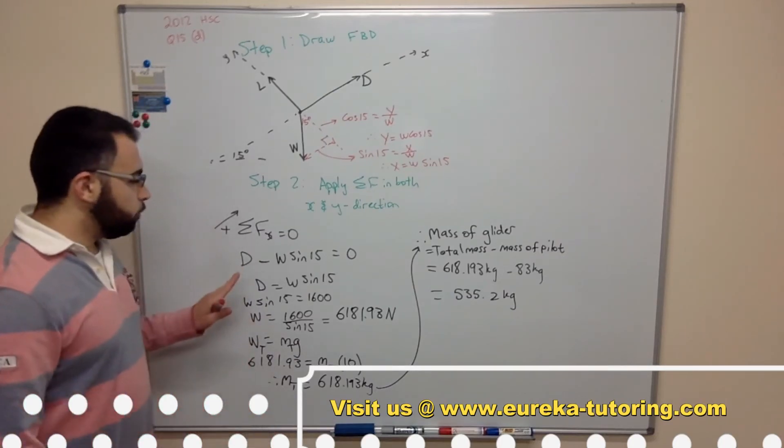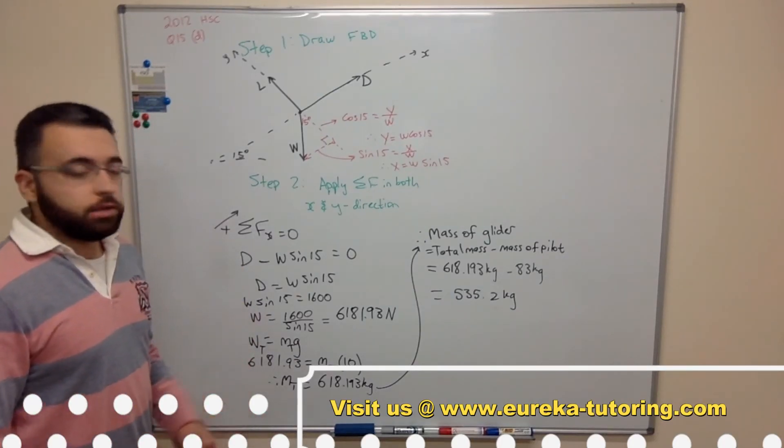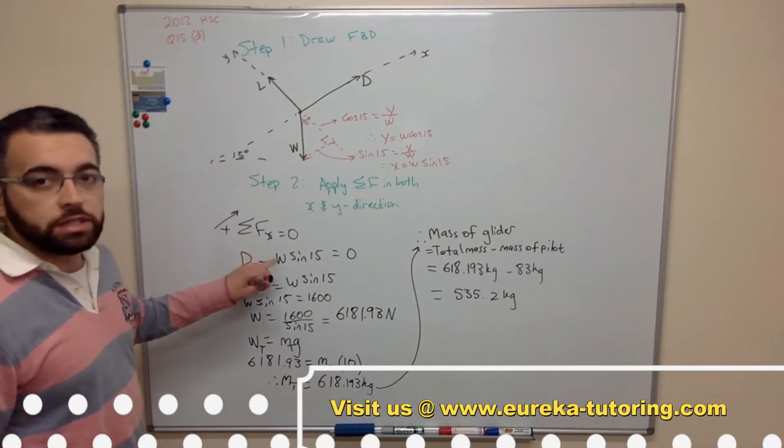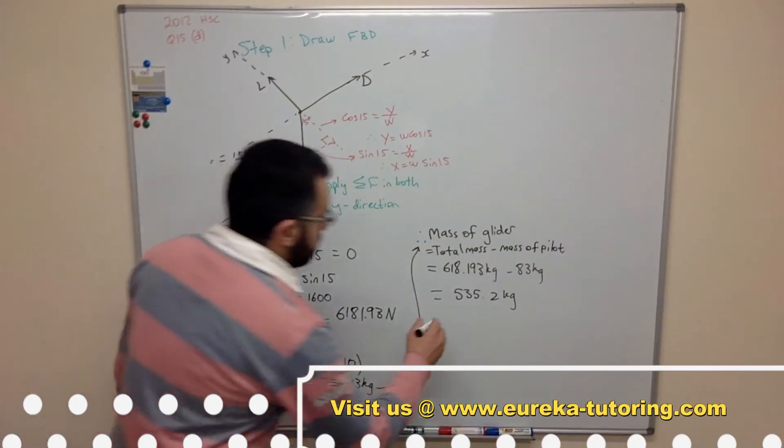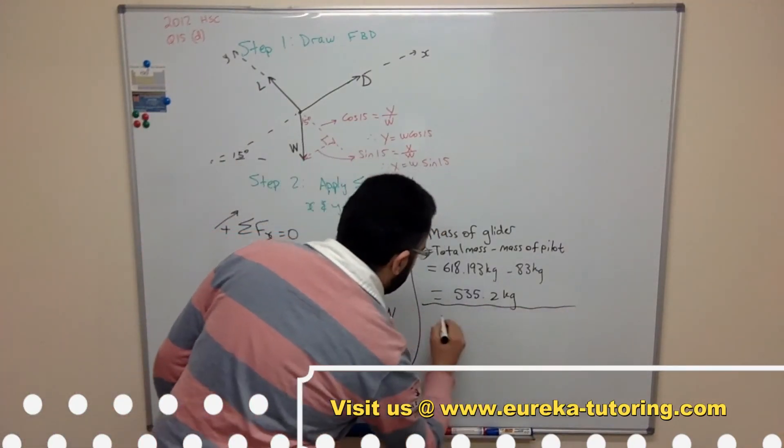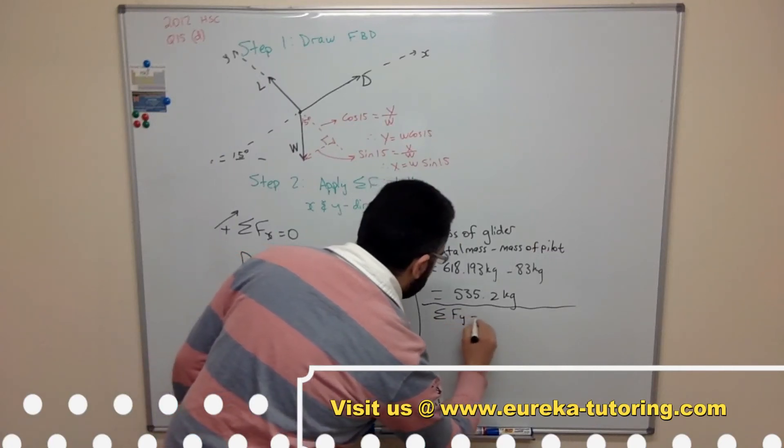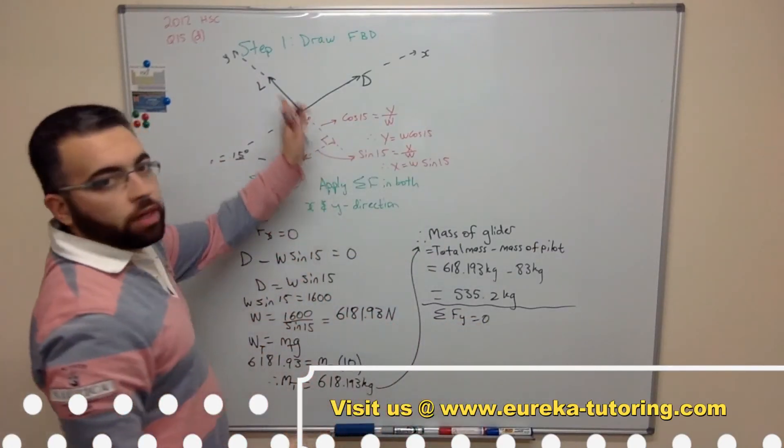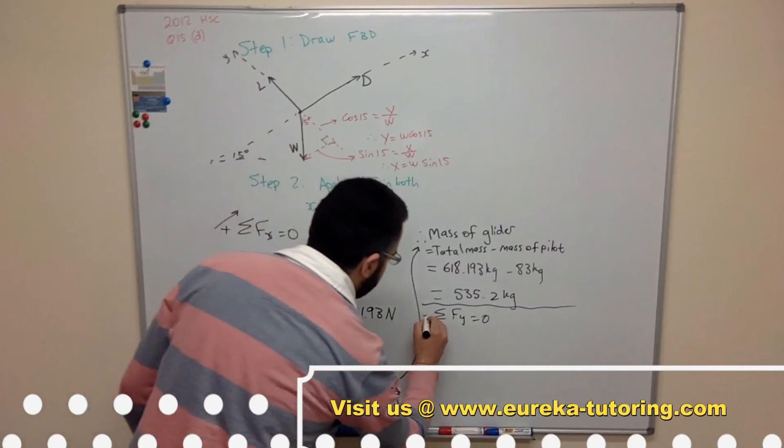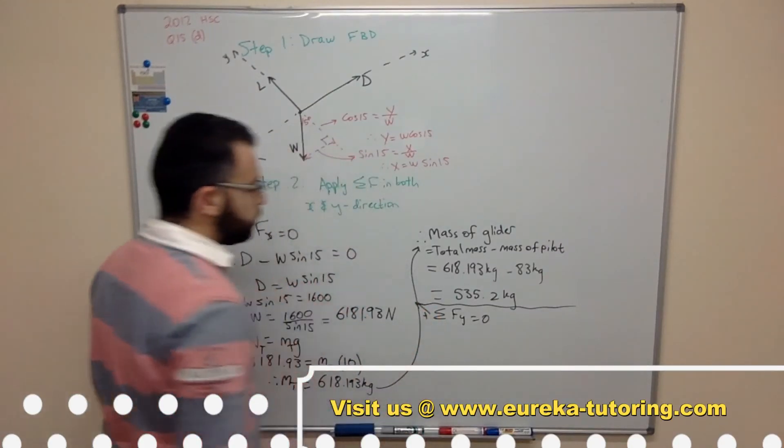So we've got a formula for drag. Now we need a formula for lift. Now to do that we use sum of forces in the y direction. So sum of forces in the y direction equals zero. I'm going to consider that to be my positive.